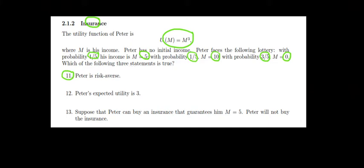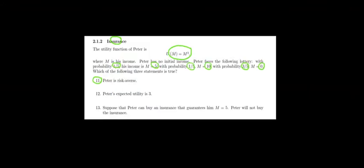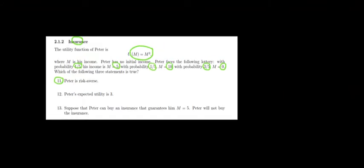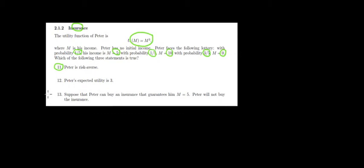Let's solve the first one about his risk preference. Risk preference has to do with the relationship between utility and money. How do we see a relationship between two variables? By looking at the derivatives. If we differentiate the utility function with respect to money, we can see how the utility changes with money.